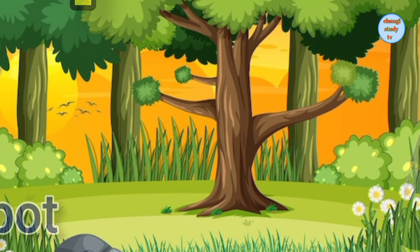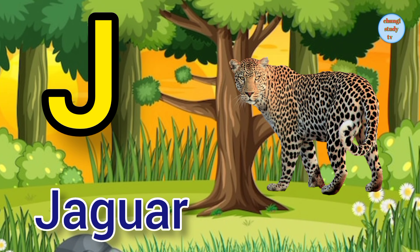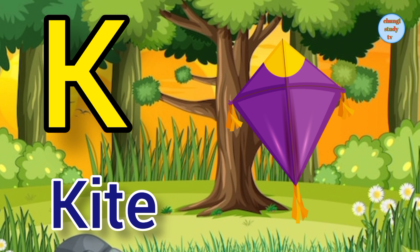I. I for inkpot, inkpot means dawa. J. J for jaguar, jaguar means tendua.